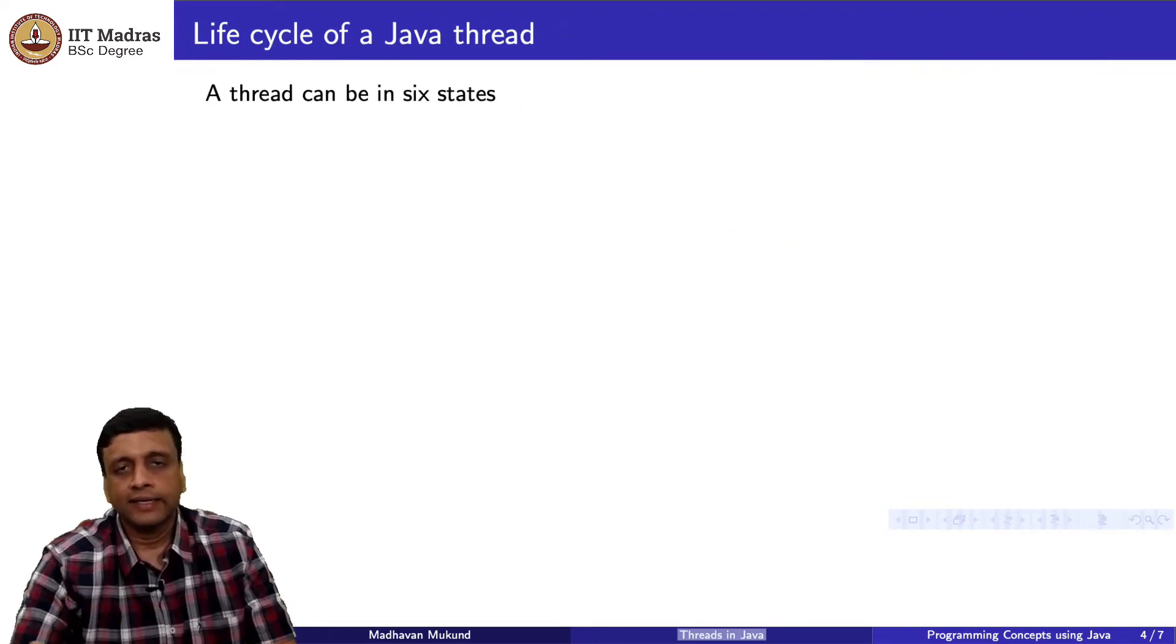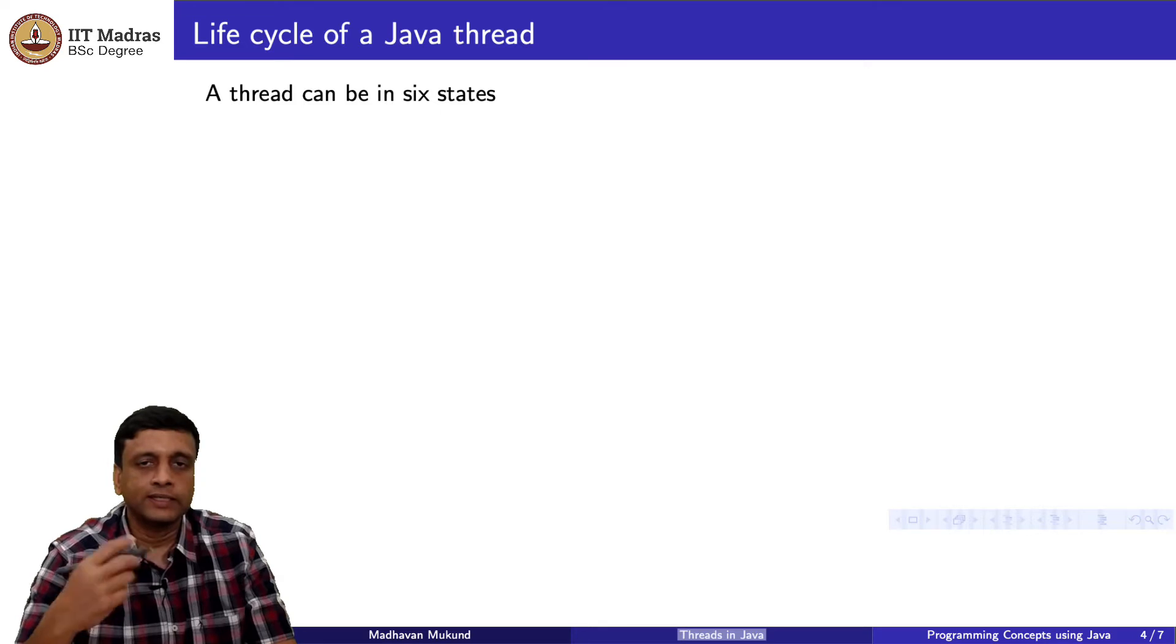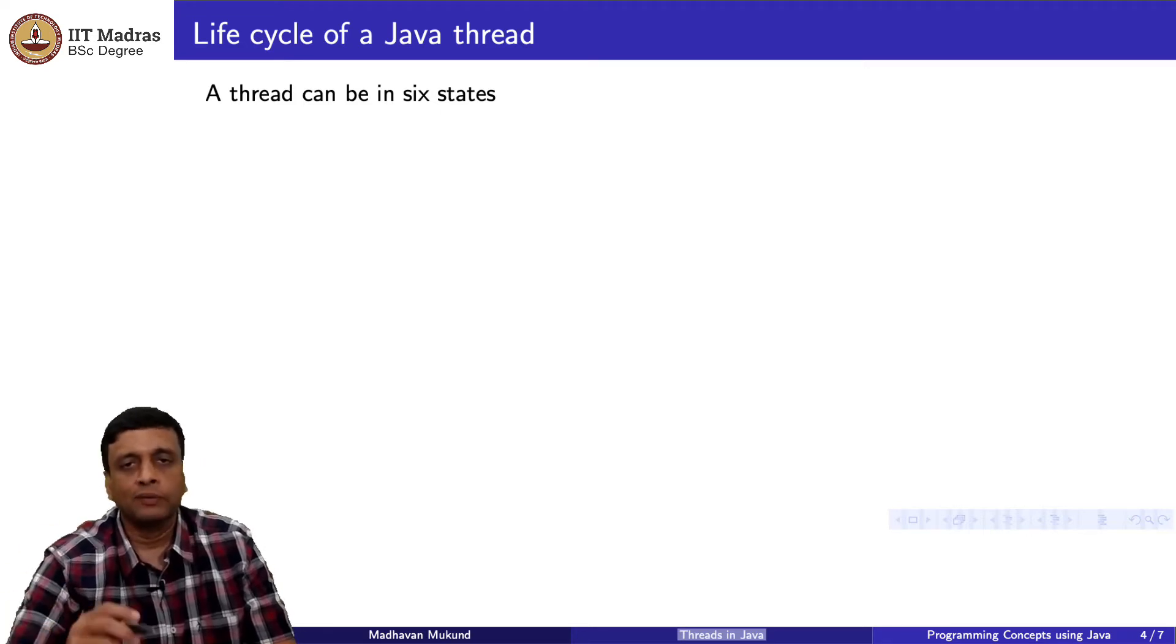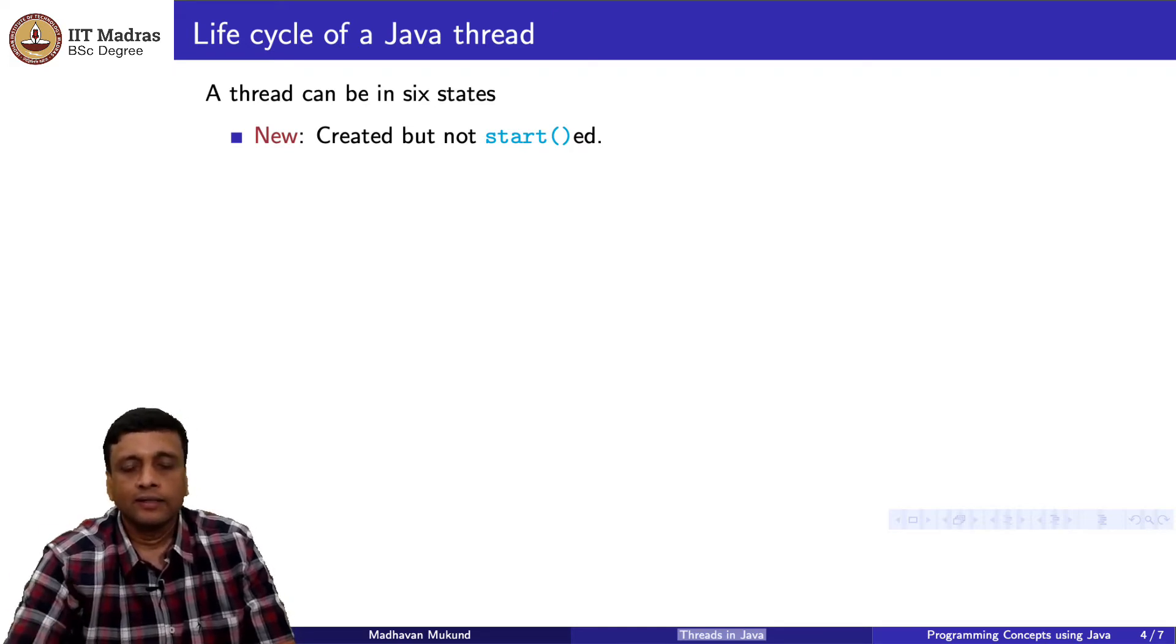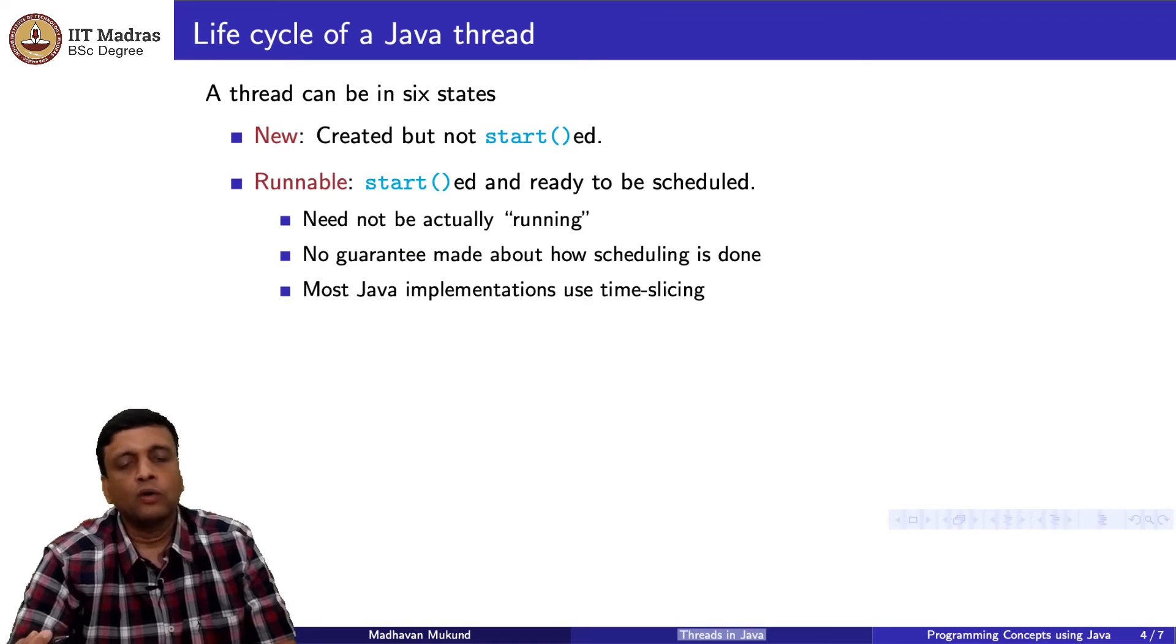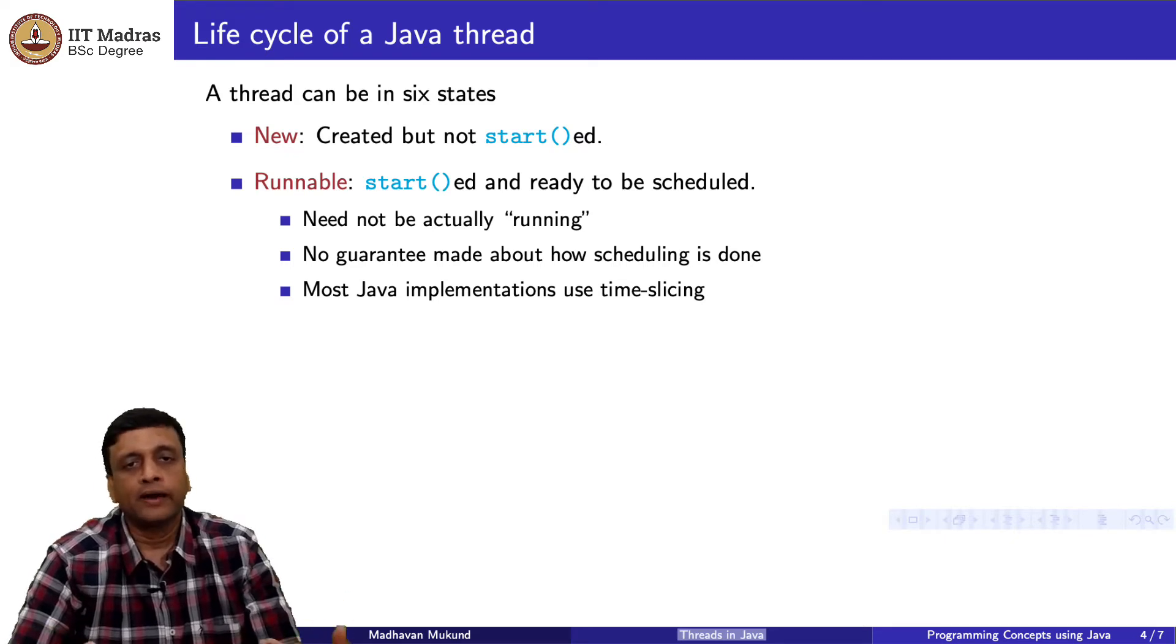A Java thread goes through a natural lifetime, like a Java function would. Like you call the function, it executes, it terminates. But in a Java thread, because it is occurring in parallel with other things, it is a little bit more complicated, the type of things that a Java thread could do. Initially, you have just created a thread, but you have not started it running. This Java thread is said to be in a new state. Once you start it, then it is said to be in a runnable state.